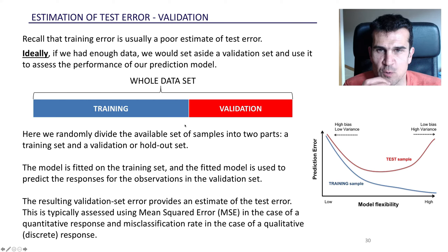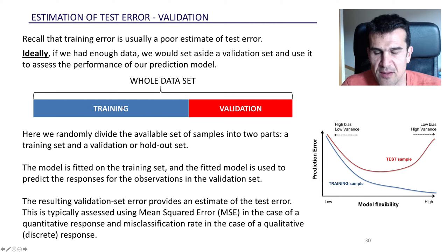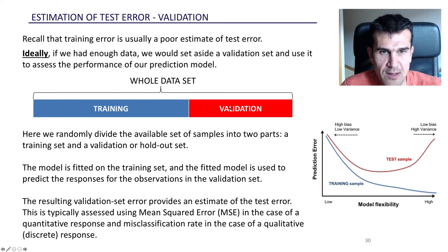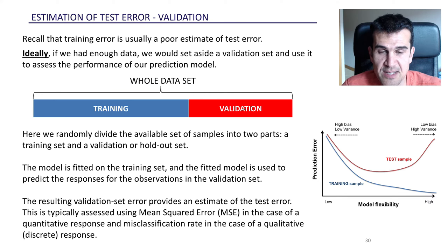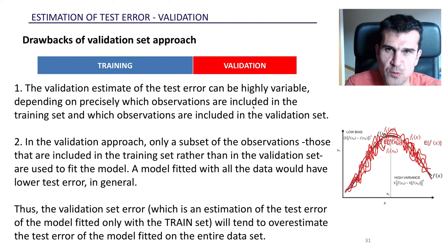We're going to see two techniques here, and the first one is called validation. The idea is pretty simple: we take our dataset and divide it into two parts — one called training and one called validation. We use the training set to train a model, then make predictions on the validation set and compute the error. This is a good estimate of the test error because the model has never seen any of the validation data.